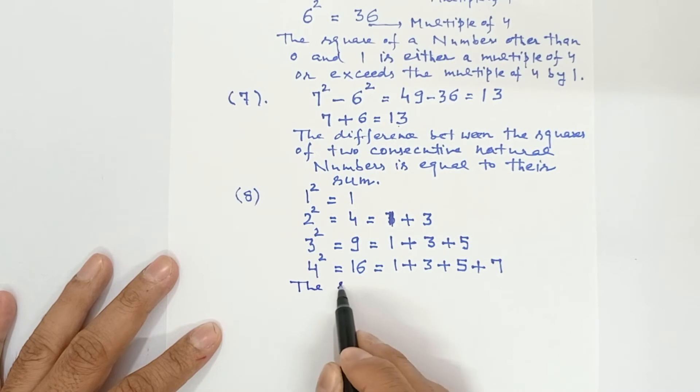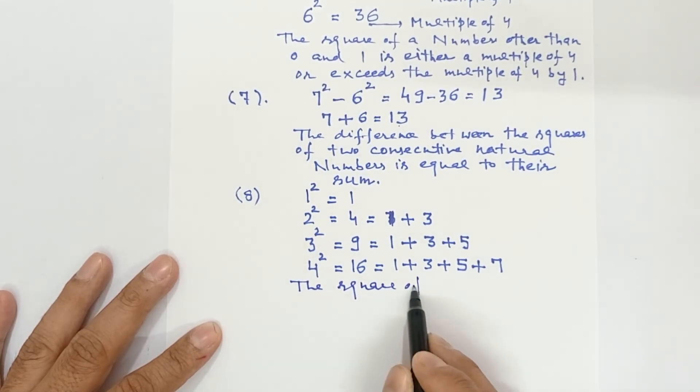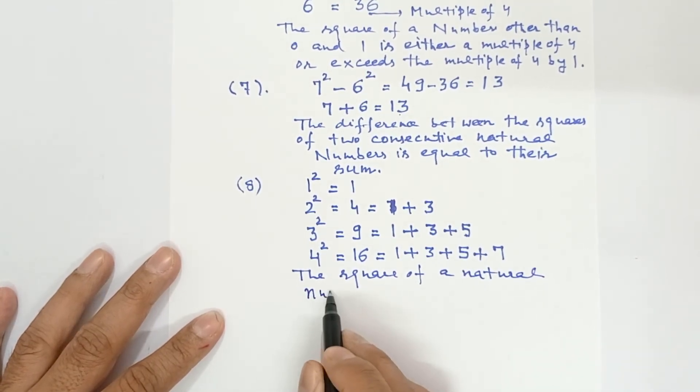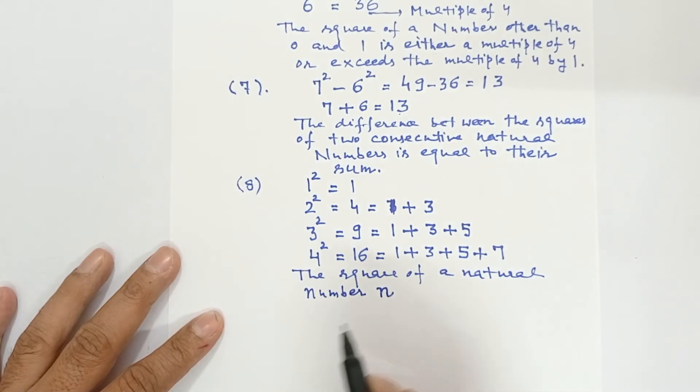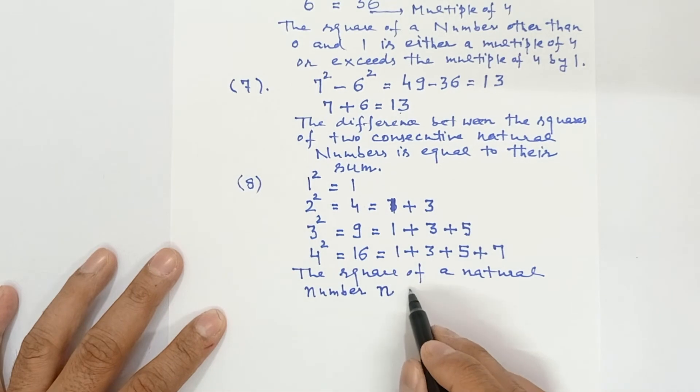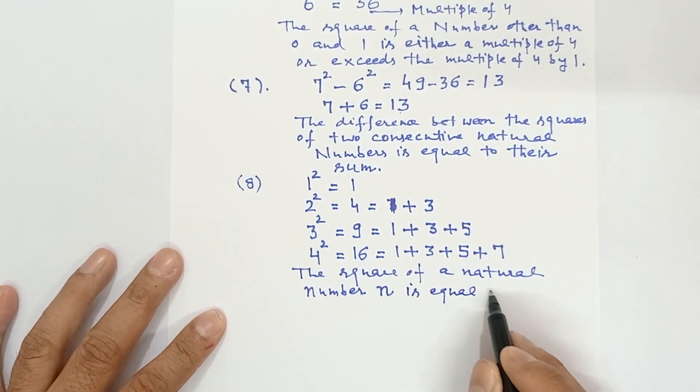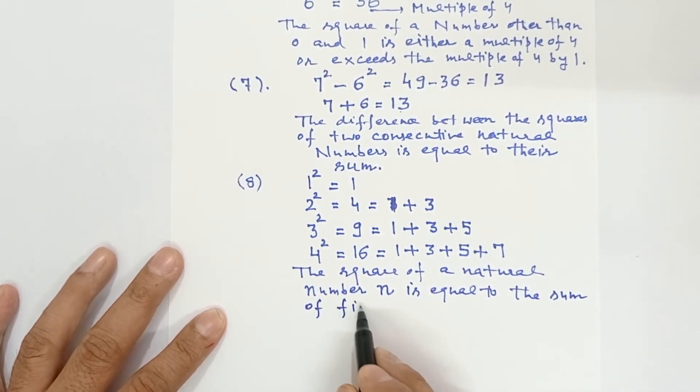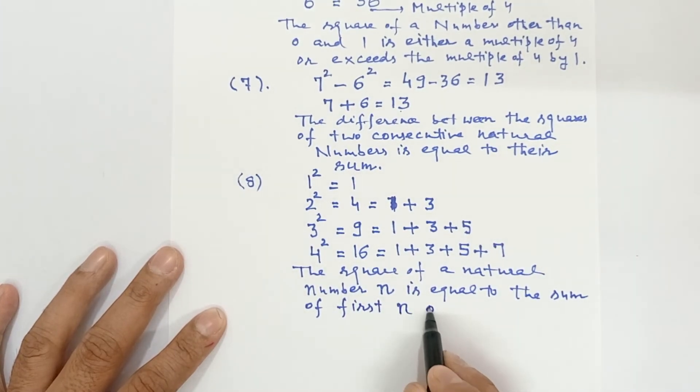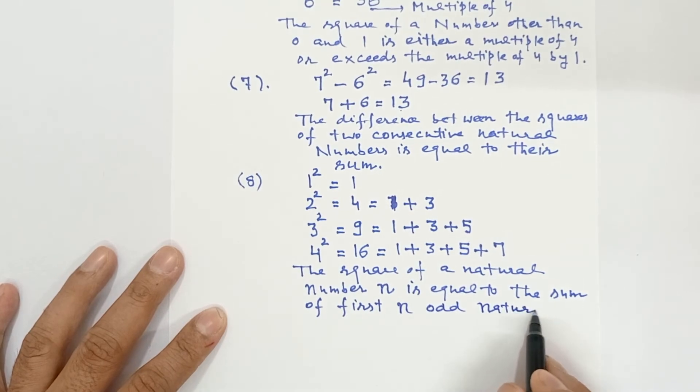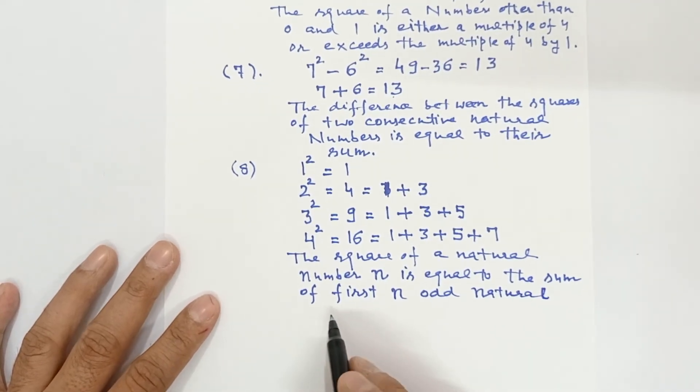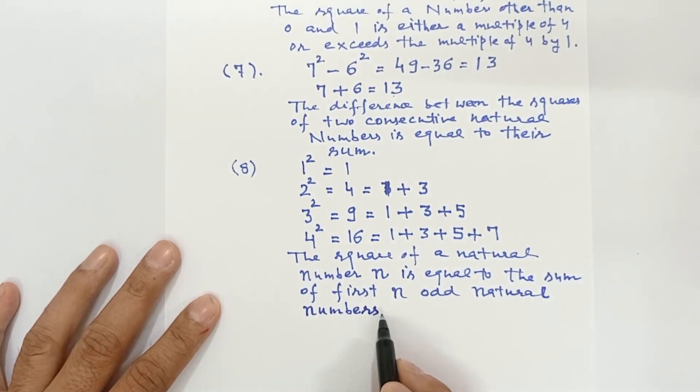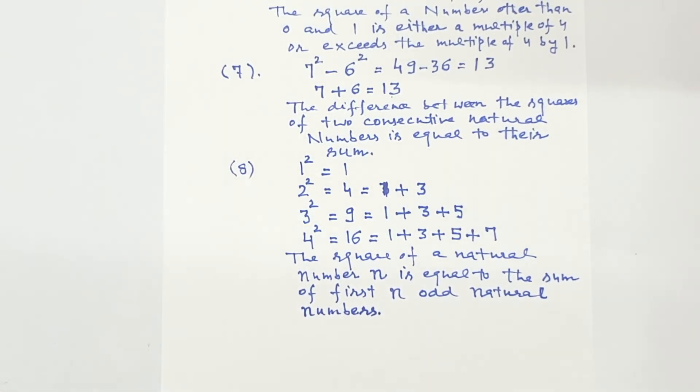So I can say the square of a natural number, let I denote the natural number by small n. The square of a natural number, small n, is equal to the sum of first n odd natural numbers. Odd natural numbers are like 1, 3, 5, 7, 9, 11, 13, and so on. So this was 8th fact about perfect squares.